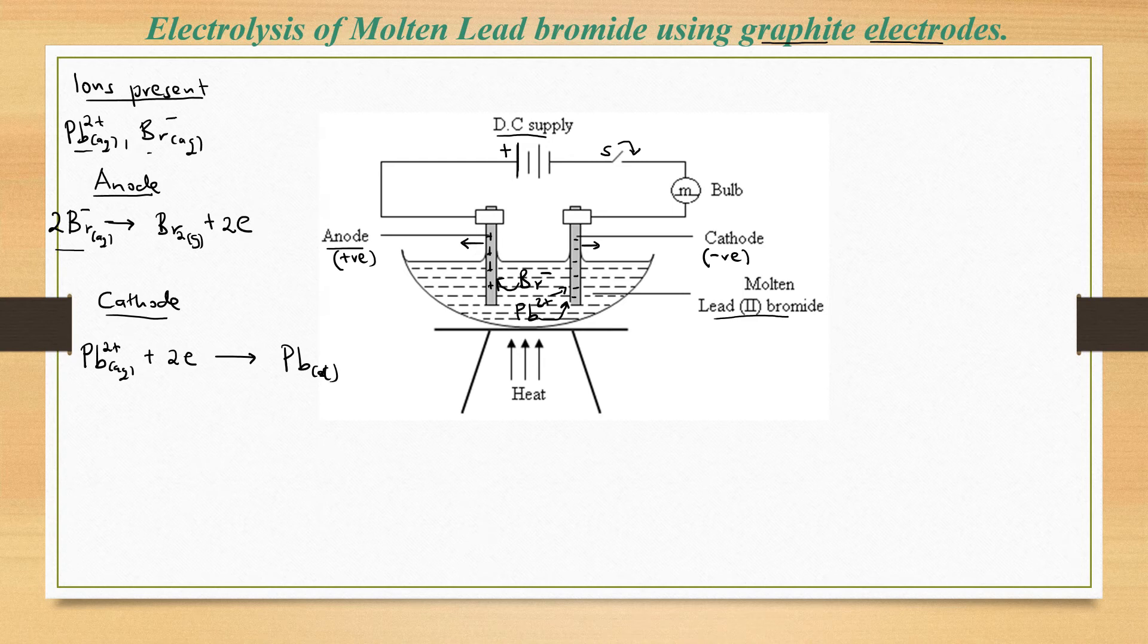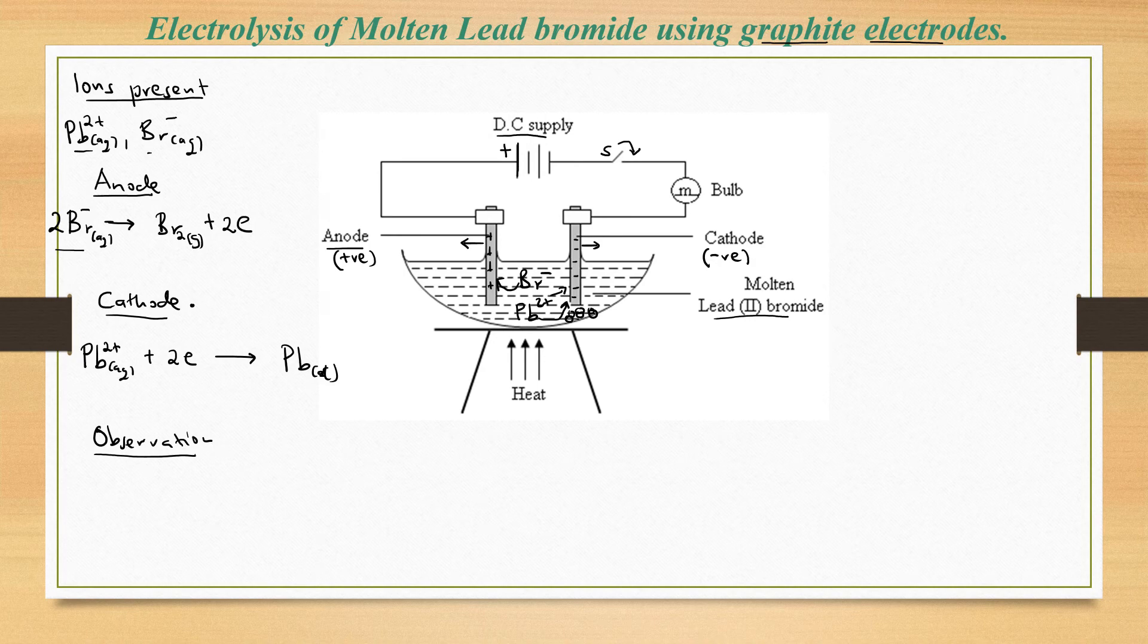In terms of observation, what is likely to be seen when you look at the cathode? At the cathode, we shall see some solid deposits, or in liquid form we shall see lead. We shall see some gray solid melting, so a gray solid will melt and sink at the cathode, and that will be due to the formation of the lead atoms.